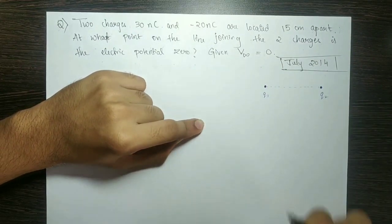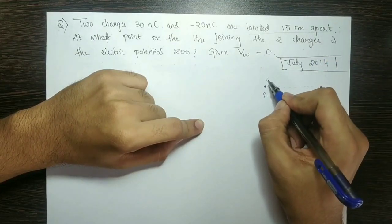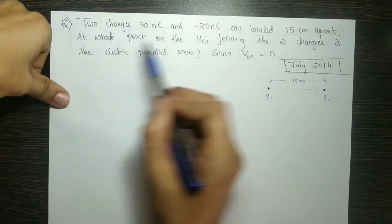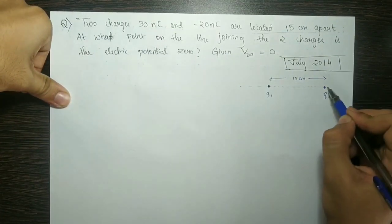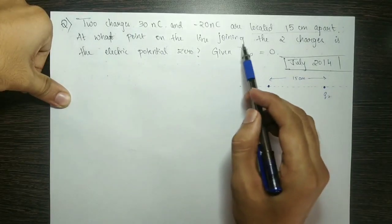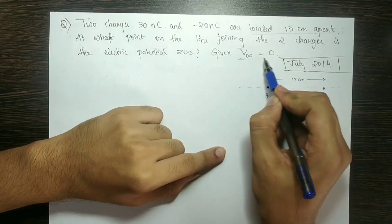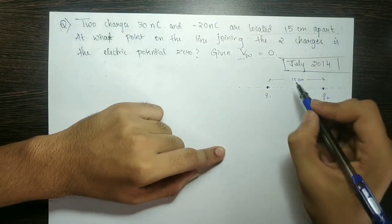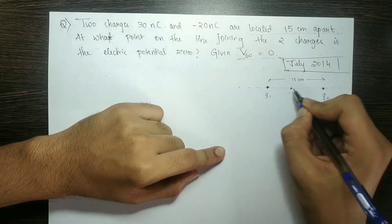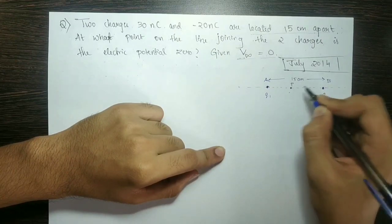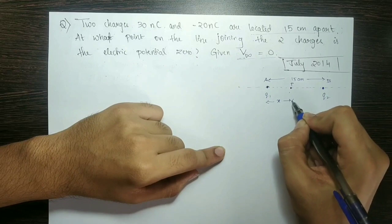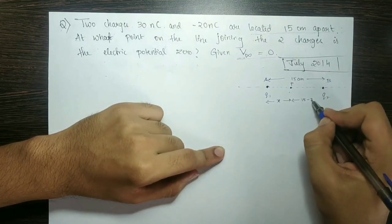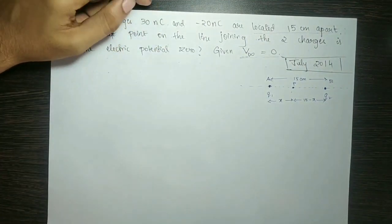The two charges are located 15 centimeters apart — this is the line joining the two charges, with total distance 15 cm. We choose a point P on this line. The distance from charge Q1 to point P is x, and the remaining distance to charge Q2 is 15 minus x, so that x plus (15 minus x) equals 15, which checks out.